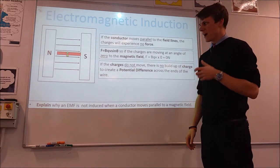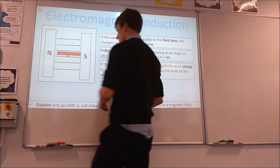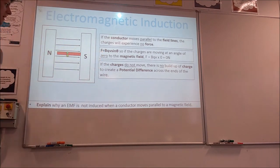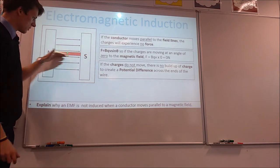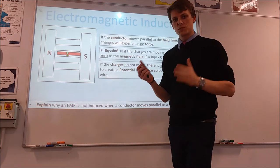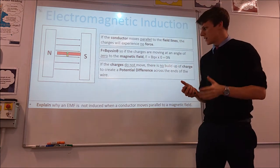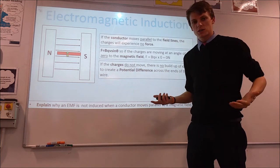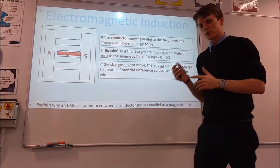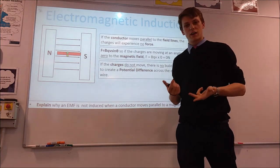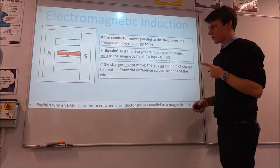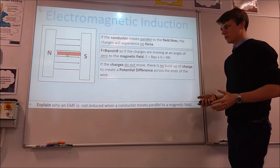What if the wire is moving parallel to the field lines — say it's going across this way? That would mean the charges are also moving across. You should know from the last video that if a charge is moving parallel to field lines it won't experience a force. And if the charges don't experience a force they can't go their separate ways and build up at separate ends of the wire, so we can't get an EMF and we can't get a current.